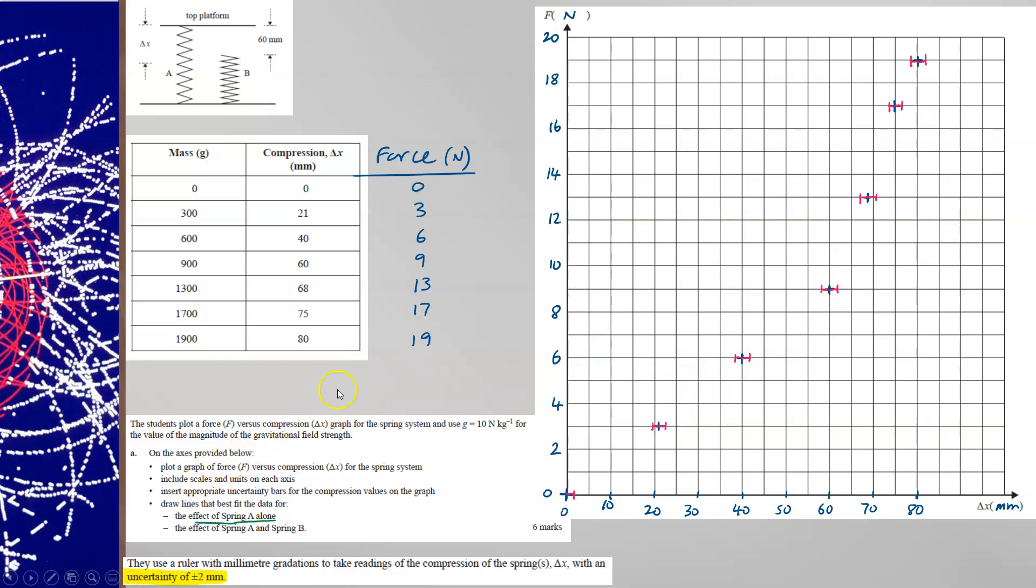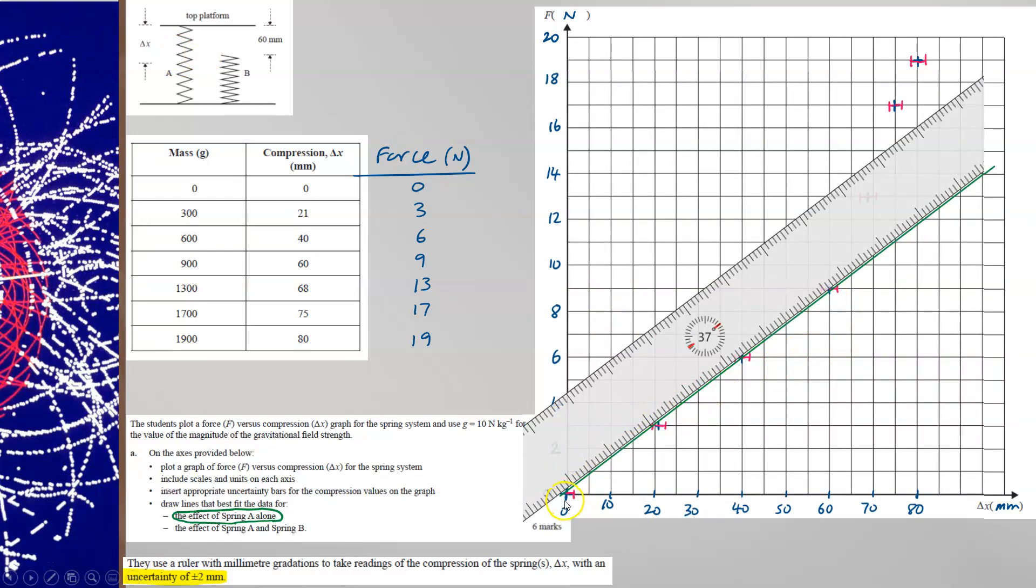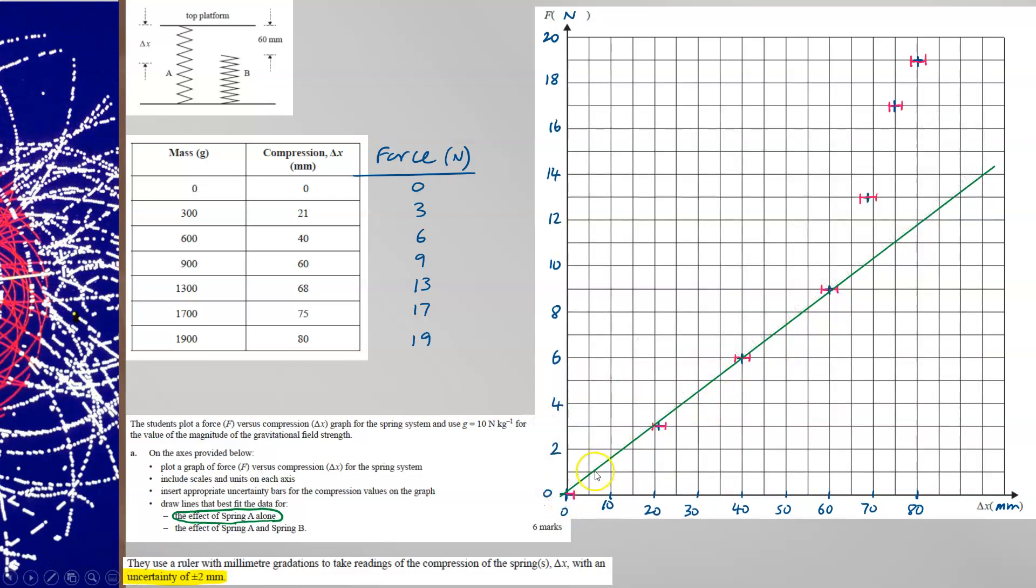Now you want to draw lines of best fit. So a line of best fit that represents spring A alone. Spring A being compressed is linear up until 60 millimetres. So use a ruler and draw a line of best fit that passes through all the uncertainty points. In fact, it can pass almost exactly through the origin and 60 millimetres. So there's my line of best fit.